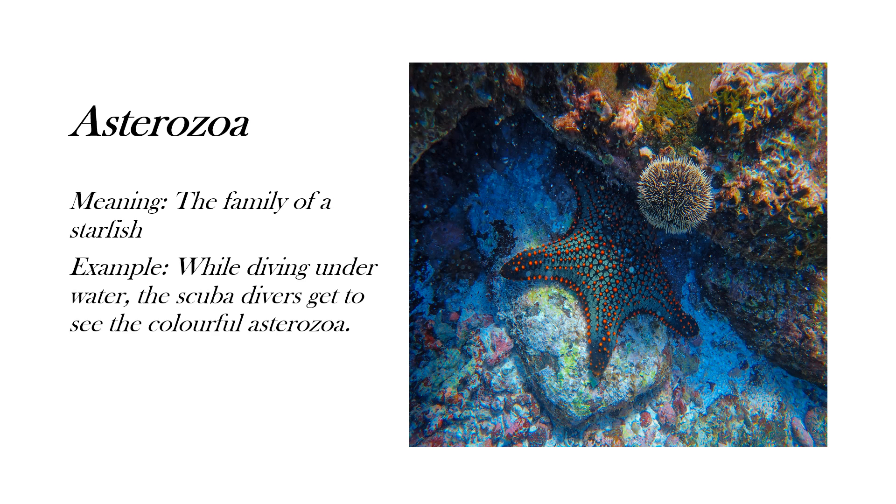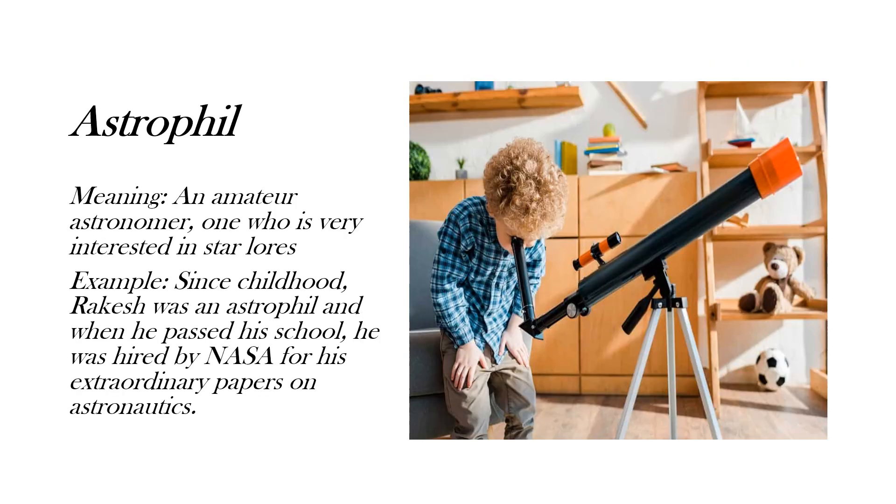Let's move on to our next word. So for the sixth word, I have taken astrophil. Here, let's break down the word into two roots, which is astro and phil. Astro means star or outer space and phil means love. So we get an amateur astronomer or one who is very interested in stars. The example is, since childhood, Rakesh was an astrophil and when he passed his school, he was hired by NASA for his extraordinary papers on astronautics.